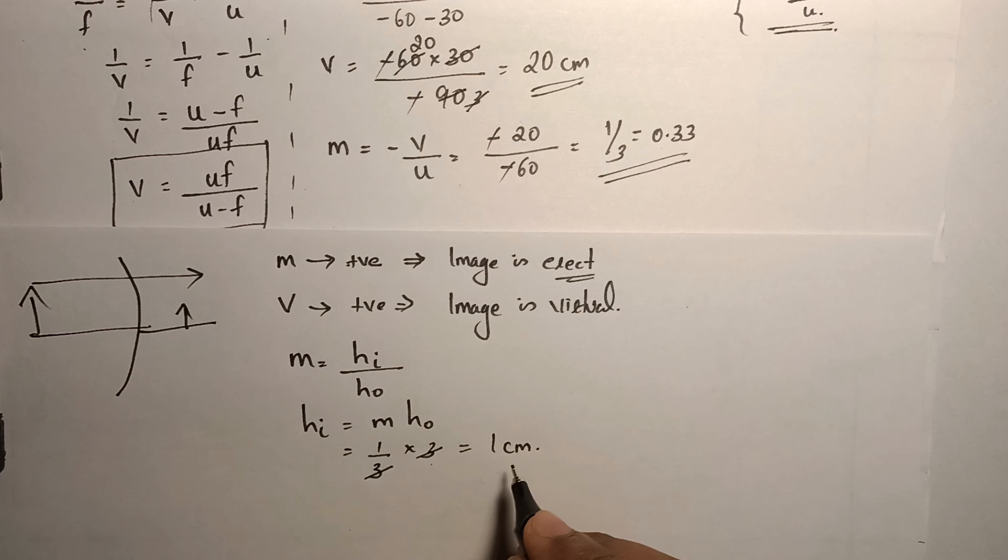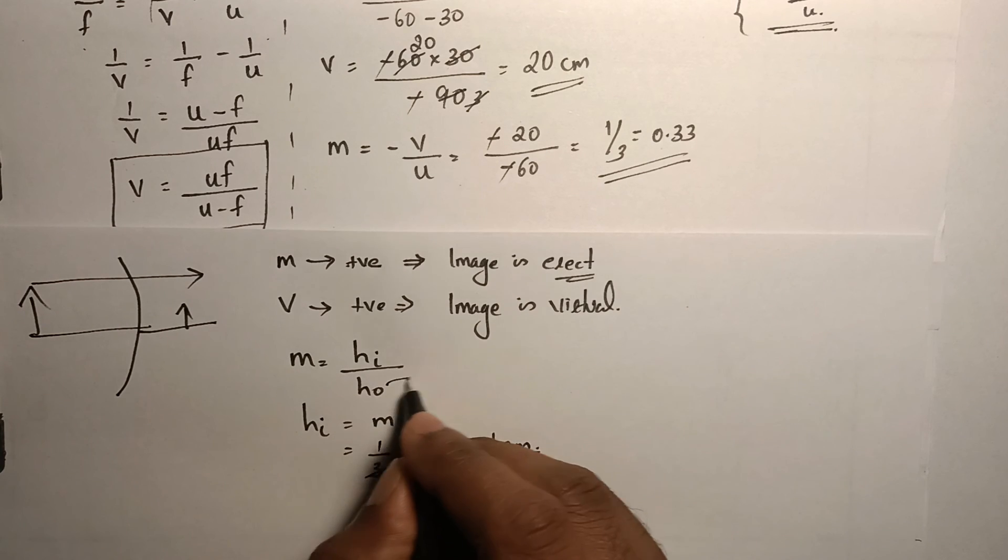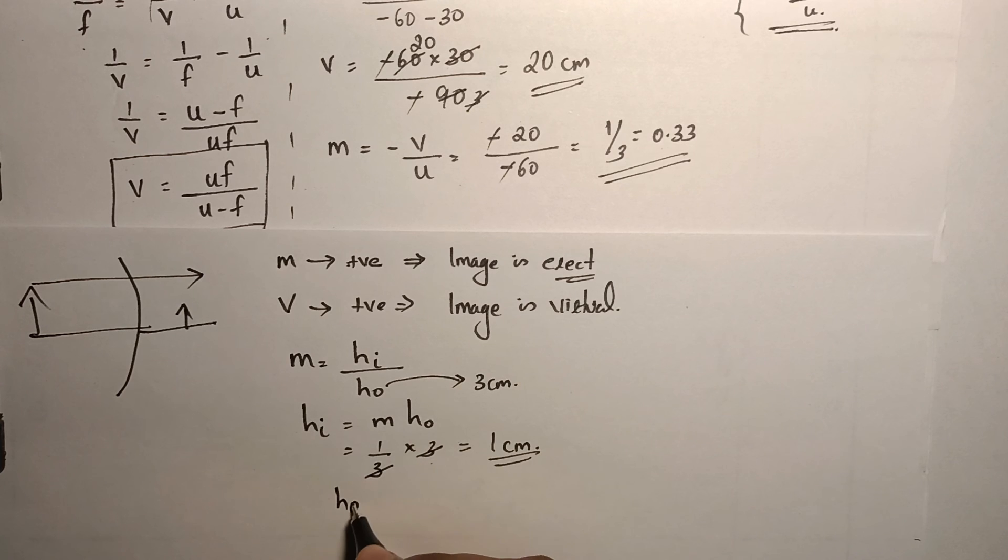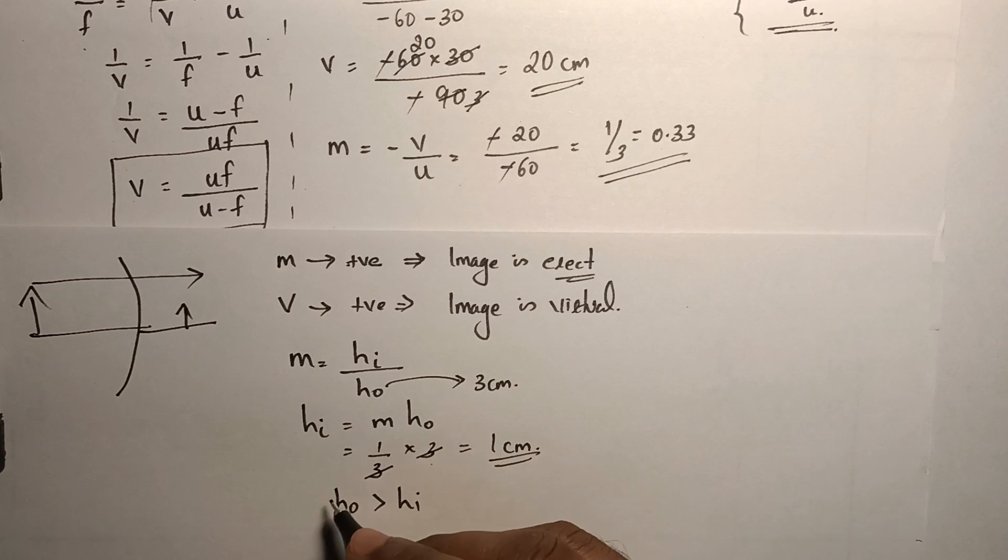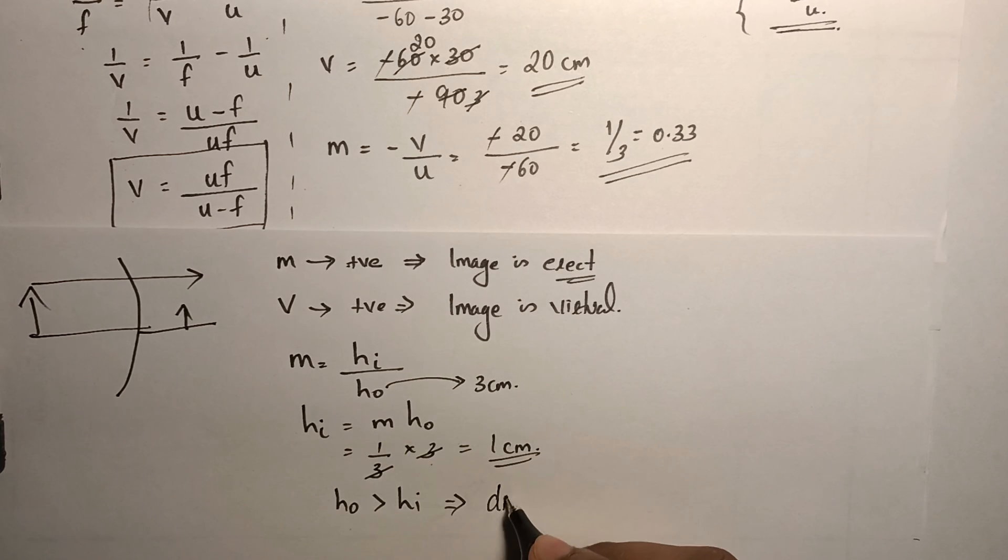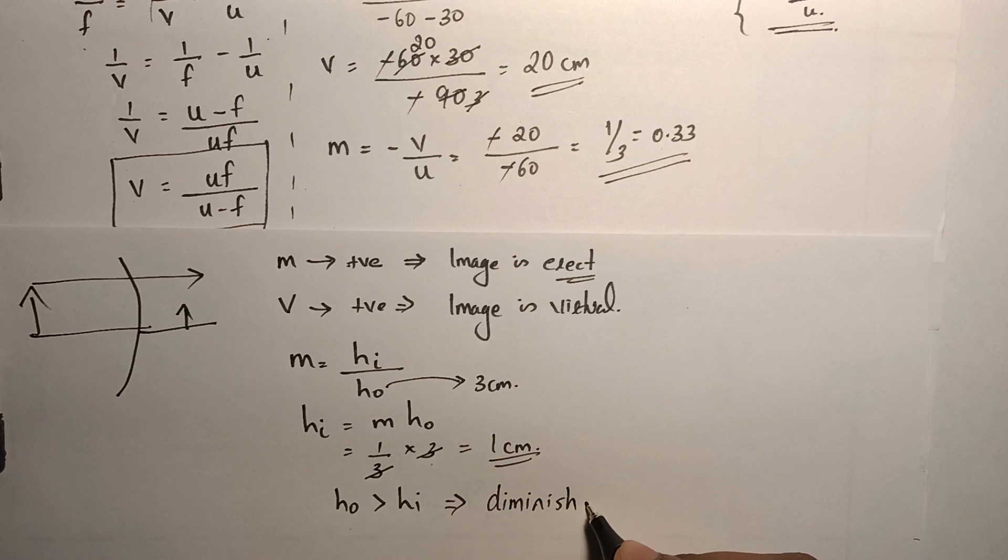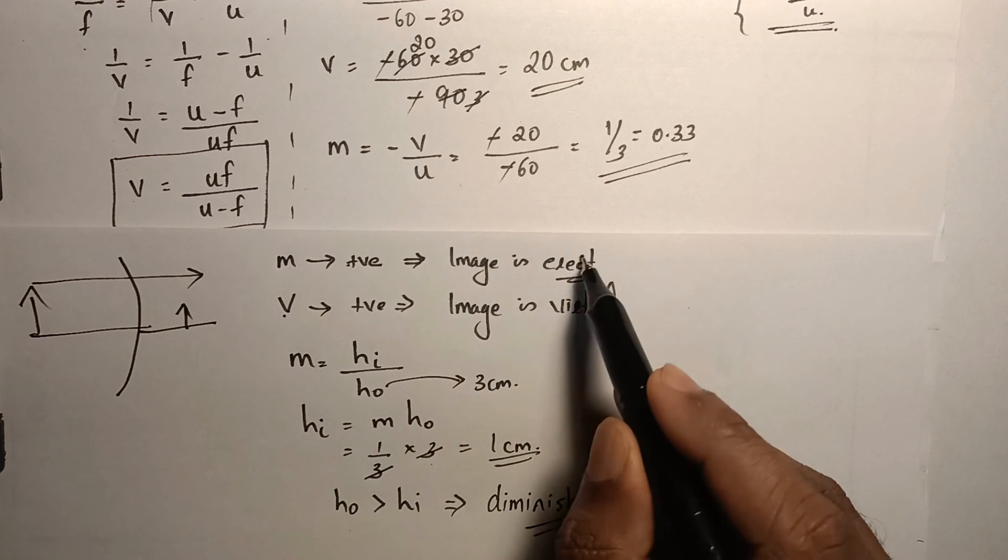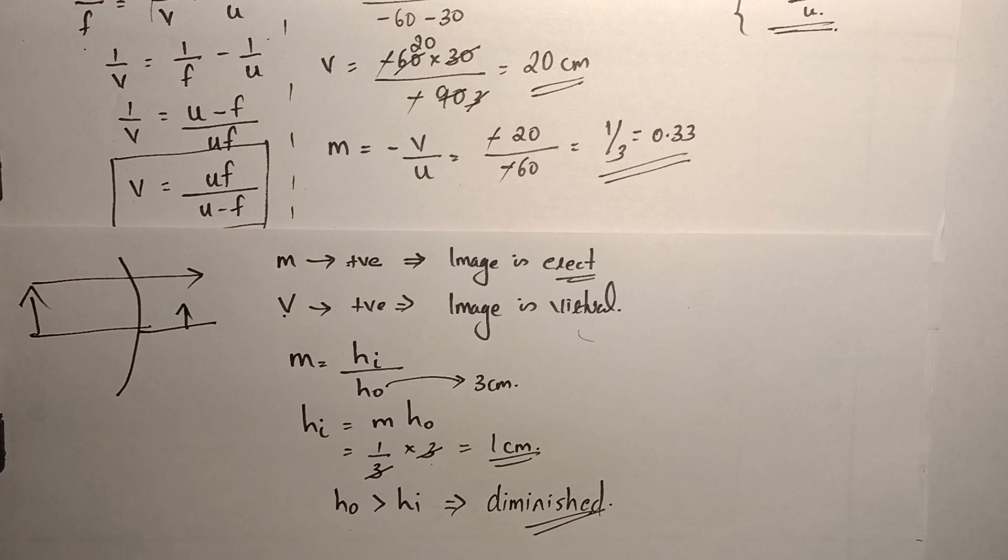Clearly, hi is 1 centimeter and ho is 3 centimeter. So, ho is greater than hi. Object is bigger and the image is smaller which implies that the image got diminished. We got the location of the image, its nature as well as its size.